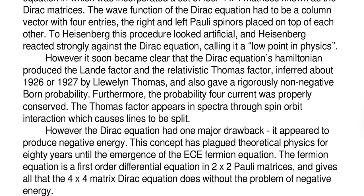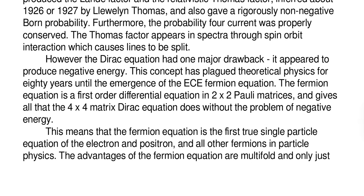it soon became clear that the Dirac equation's Hamiltonian produced the Landé factor and the relativistic Thomas factor inferred about 1926 or 1927 by Llewellyn Thomas and also gave a rigorously non-negative Born probability. Furthermore, the probability four-current was properly conserved. The Thomas factor appears in the spectra through spin-orbit interaction which causes lines to be split. However, the Dirac equation had one major drawback. It appeared to produce negative energy. This concept has plagued theoretical physics for eighty years until the emergence of the ECE Fermion equation.